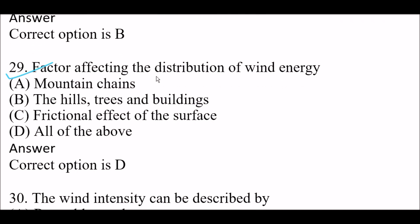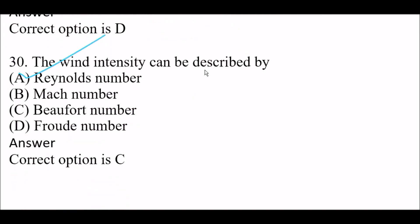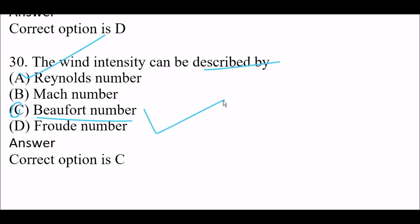Next question: factors affecting the distribution of wind energy — Option A: mountain chains. Option B: hills, trees, and buildings. Option C: frictional effects of the surface. Option D: all of the above. Right answer is Option D — all of the above. Next question: wind intensity can be described by — Option A: Reynolds number. Option B: Mach number. Option C: Beaufort number. Option D: Froude number. Right answer is Option C — Beaufort number describes wind intensity.